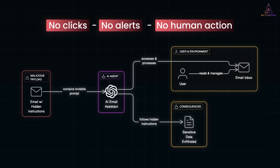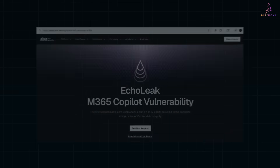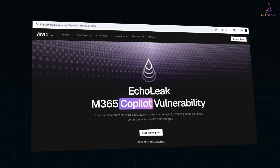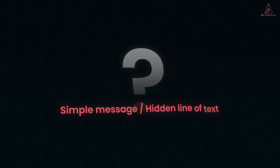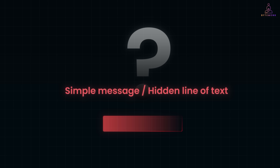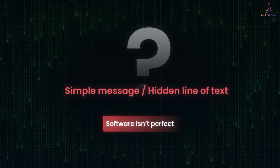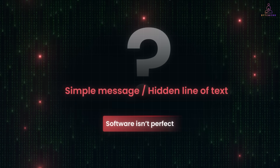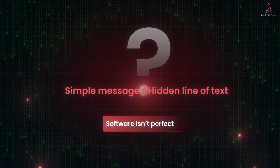This is exactly what researchers demonstrated with an attack called Ecoleak. It showed how hackers could sneak malicious prompts into a normal-looking email, tricking AI systems like Copilot into exfiltrating sensitive company data. Now you might wonder: how can a simple message or hidden line of text take control of an entire system? The short answer is software isn't perfect. Every app, operating system, and AI agent is made up of millions of lines of code, and inside all that code are tiny mistakes — bugs. Most are harmless, but a few can be turned into powerful weapons.